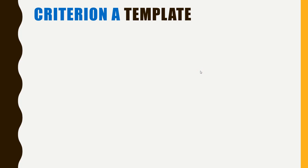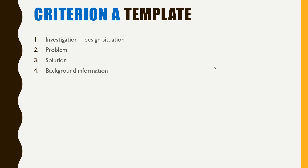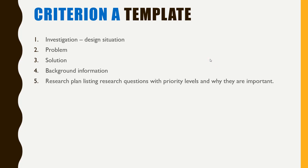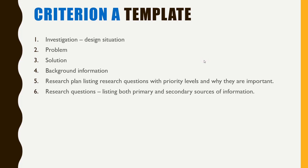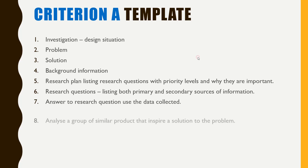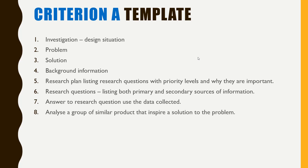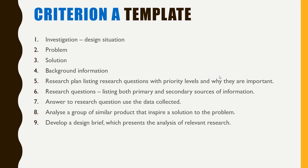The template you should follow when building this assignment is: investigate the design situation, focus on the problem you need to resolve, find the solution — it doesn't need to be exactly how you'll do it but needs to be the big picture idea — include some background information, then a research plan listing research questions with priority levels and why they are important, answers to the research questions using data collected, an analysis of similar products, a design brief presenting relevant research, and finally a bibliography.